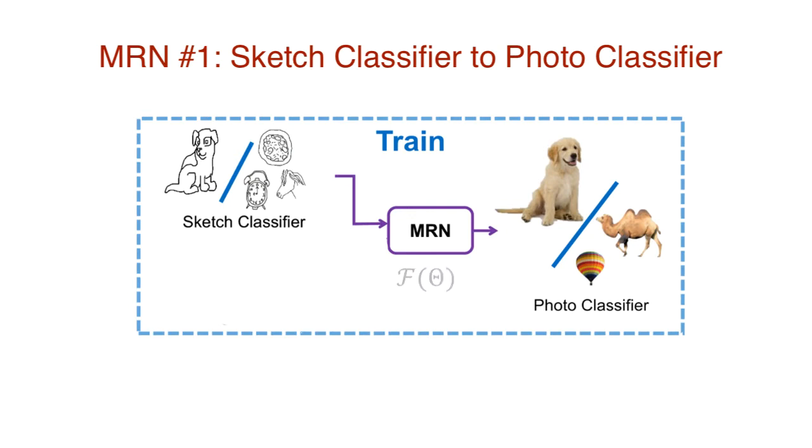Let the MRN be a parametric model f, parameterized by big theta. We also let the input sketch classifier be a parametric model little f, parameterized by theta s. And the output image classifier is a parametric model little g, parameterized by theta p. They all have their own parameters that need to be learned. Parametric models make life easier because the problem of determining a model is reduced to the problem of determining their parameters. We train a sketch classifier to get the parameters theta s. This is input to our MRN and trained to get the parameters of the photo classifier theta p. Since the output of the MRN is an approximation, I put a cap on it. Since we have theta p and the photo classifier is parametric, we have essentially synthesized a photo classifier.